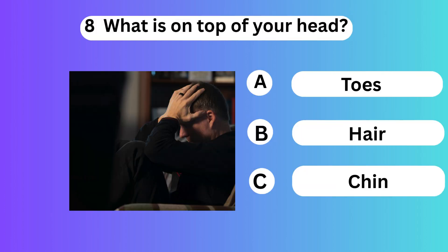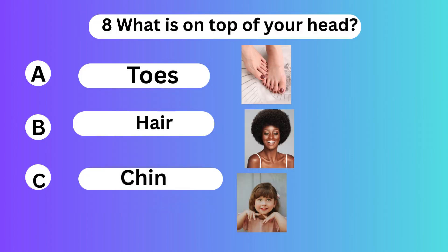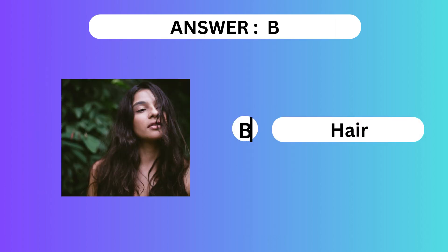Question 8. What is on top of your head? A. Toes. B. Hair. C. Chin. Answer is B. Hair.